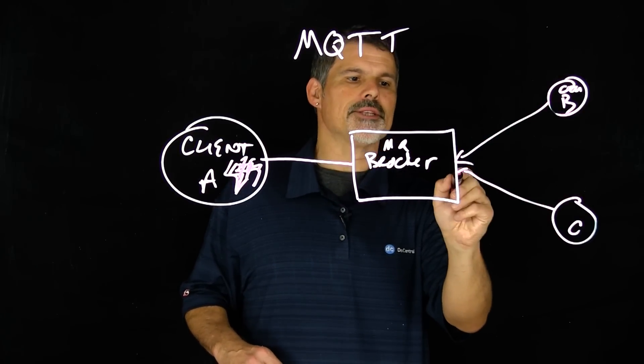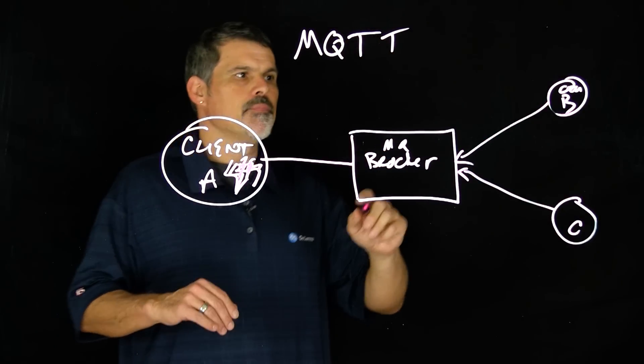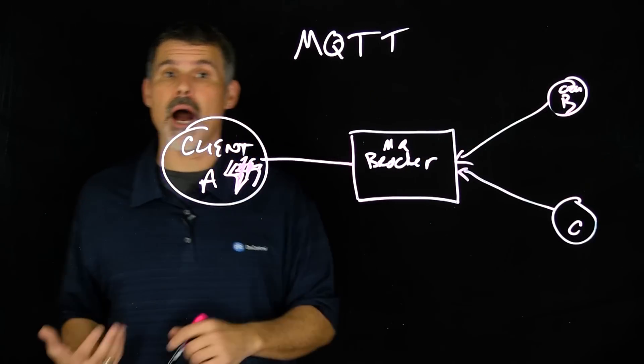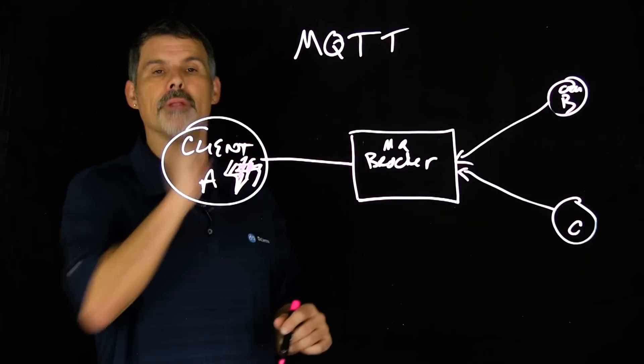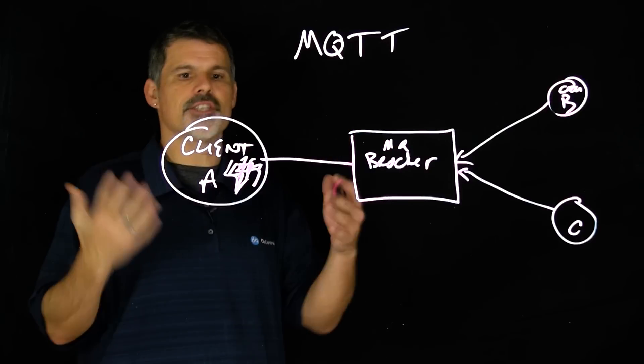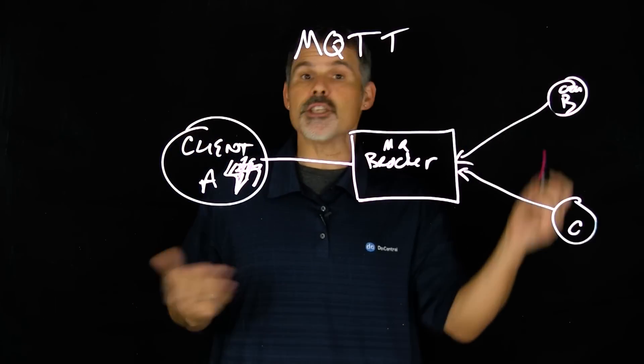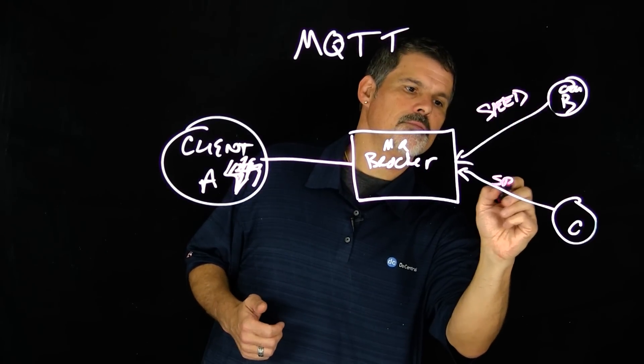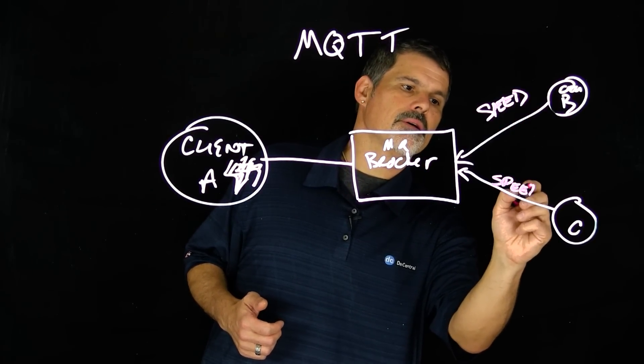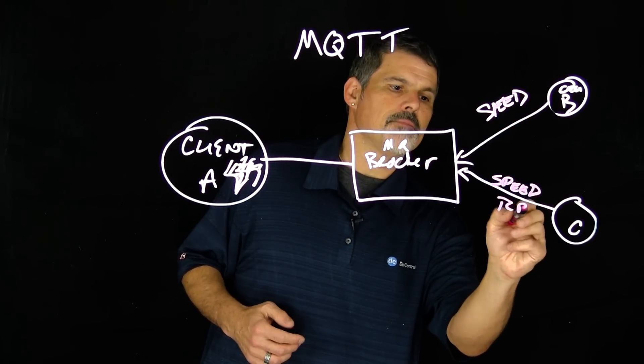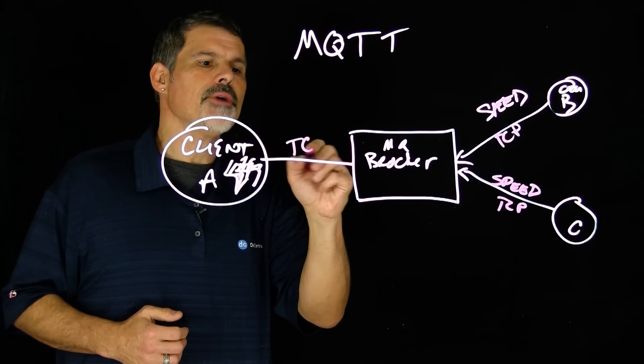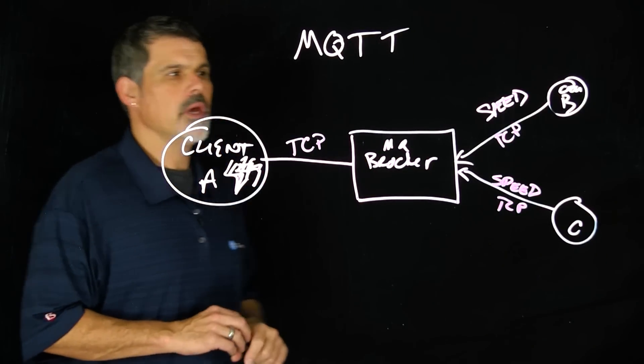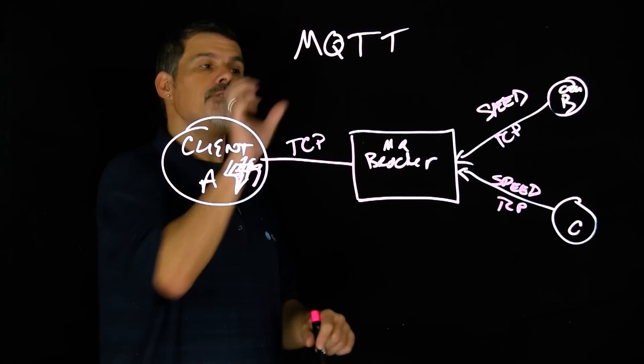So how this all works is quite simple. What happens is these particular clients out there will subscribe to a certain topic that then gets published to the broker. And in this instance, in our simple diagram here, say they subscribe to the topic of speed. And TCP, so all three will open a TCP connection to the MQ broker.